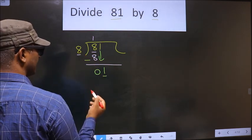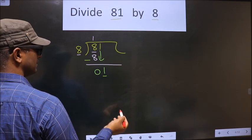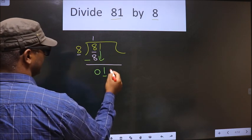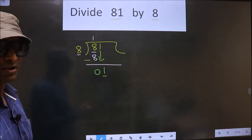1 is smaller than 8. So, what they do is they put the decimal here and take 0 here which is wrong.